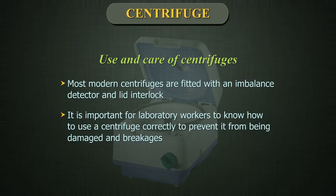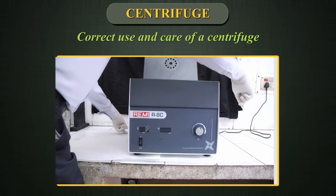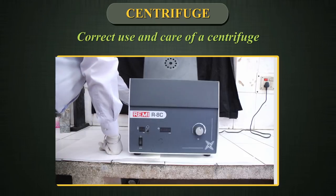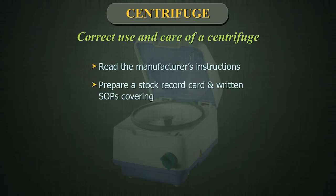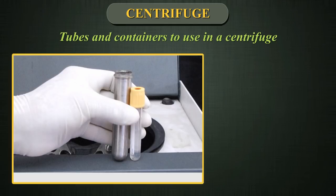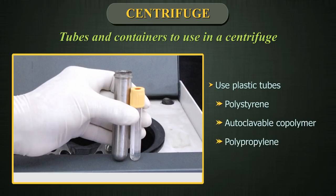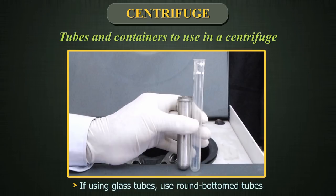Although most modern centrifuges are fitted with an imbalance detector and lid interlock, it is important for laboratory workers to know how to use a centrifuge correctly to prevent damage and breakages. Place the centrifuge on a firm, level bench away from direct sunlight, towards the back of the bench. Leave a clear area of 30 centimeters around the centrifuge. Read the manufacturer's instructions and prepare a stock record card and written SOP covering the use, cleaning, and maintenance. Whenever possible, use plastic tubes made from polystyrene or polypropylene. Do not use thin-walled glass tubes or disposable vials as they break easily even at low RCF.